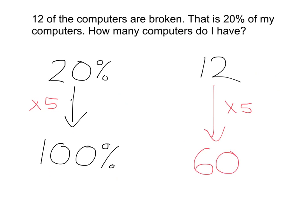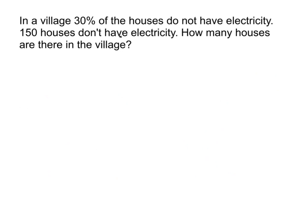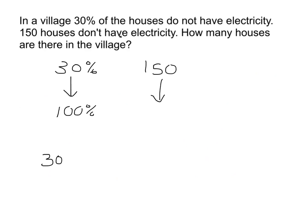Let's look at another example. In a village, 30% of the houses do not have electricity, and 150 houses don't have electricity. How many houses are there in the village? What we've got is that 30% is 150, and we want to get to what 100% is. Whatever we do to get from 30% to 100%, we must do the same to the 150. The problem here is it's not so easy to see what to multiply 30 by to get to 100.